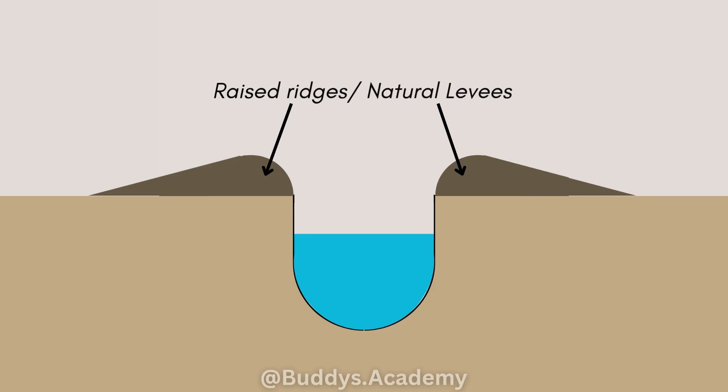We need to understand that even though natural levees are going to keep your river in its main channel, that does not mean that during extreme flooding your river is not going to flood and break these natural levees — because that can still happen.